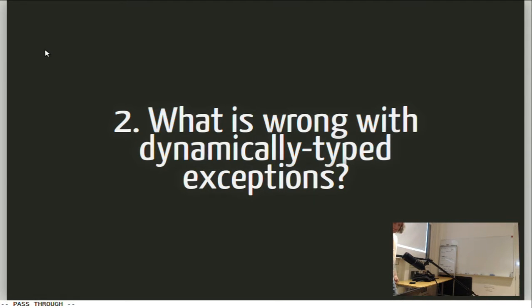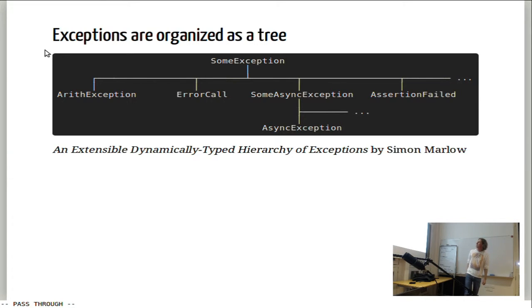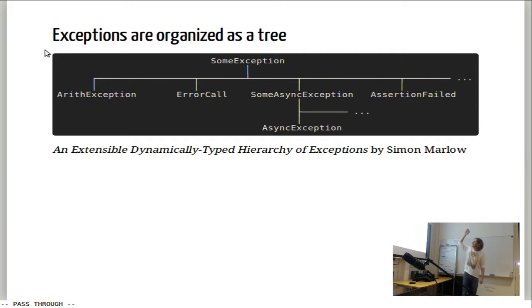That was the first part. Second part: what is wrong with dynamically typed exceptions? Exceptions are organized as a tree. At the root we have some exception, and we want to model subtyping — like in Java or Ruby — a hierarchy of exceptions. We have a hyper-root 'some exception', then arithmetic exceptions, error call, assertion failed, async exceptions, and more below that. This is described in the paper 'An Extensible Dynamically Typed Hierarchy of Exceptions'.